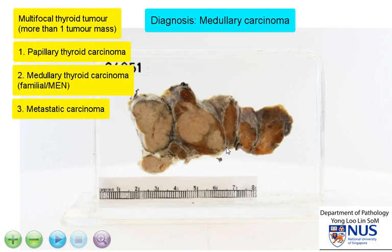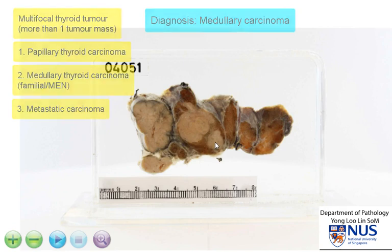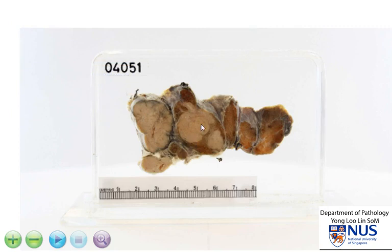So it is not really possible to tell them apart looking at the gross appearance. However, on microscopy, they look very distinct. To summarize, this is a multifocal tumor in the thyroid gland, and the main two differential diagnoses include papillary thyroid carcinoma and familial medullary thyroid carcinoma, or medullary carcinoma in the context of MEN.